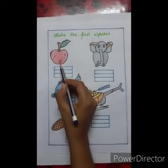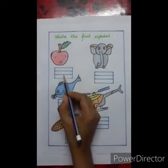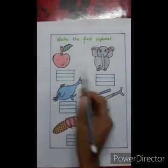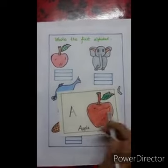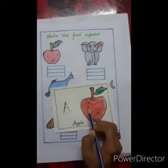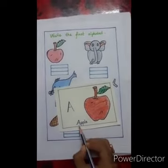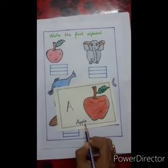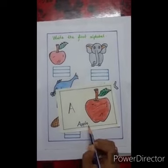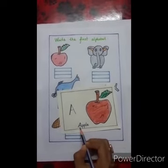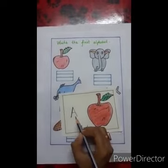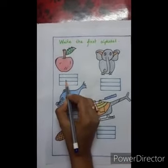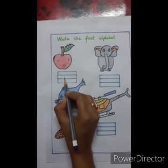This is a picture of an apple. You have to write the first alphabet of apple. This is an apple. The spelling of apple is A, P, P, L, E. So the first alphabet of apple is A. A for apple. Now here we have to write the alphabet A.